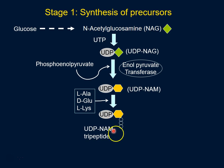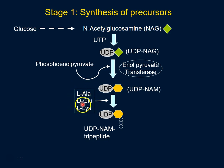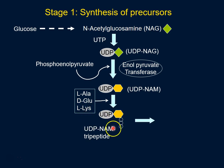UDP-NAM tripeptide is then converted to UDP-NAM pentapeptide, where two additional amino acids are attached. I have highlighted these in a different color because they are functionally important when it comes to inhibition of cell wall synthesis with certain antibiotics.